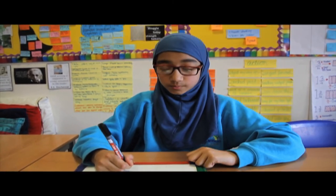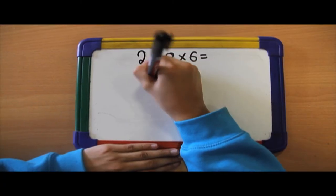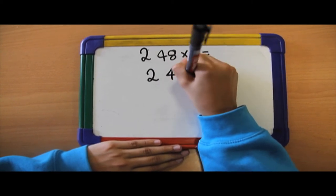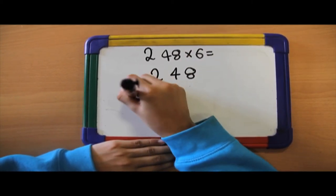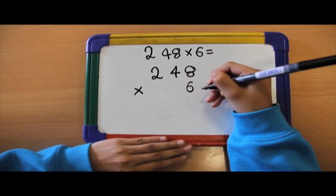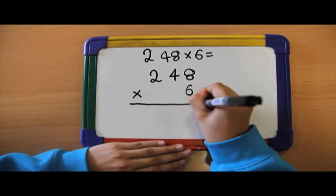Now, we're going to do our column method for this sum. So we're going to put the 2 in the hundreds column, the 4 in the tens column, and the 8 in the ones column. We're going to put the times sign here to know we're timesing, and we're going to add the 6 here so we know we're timesing by 6.